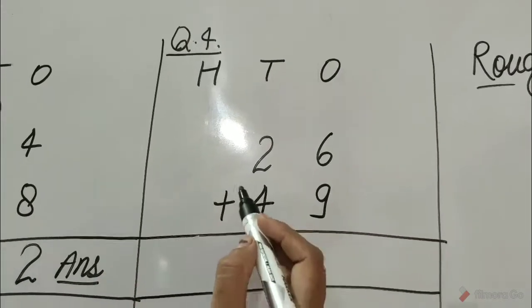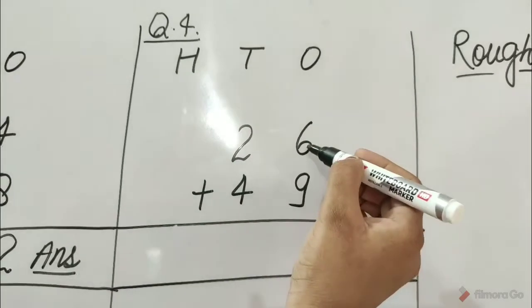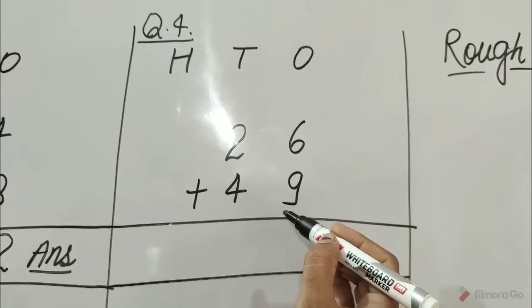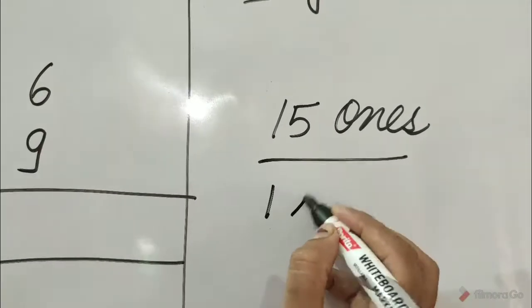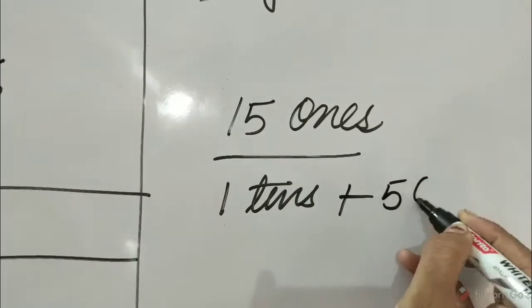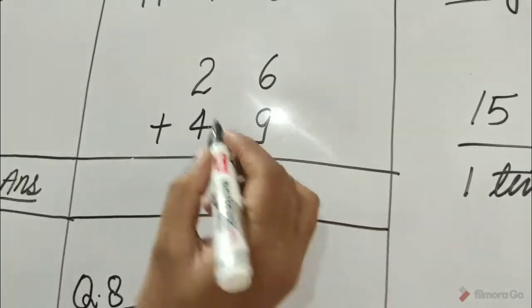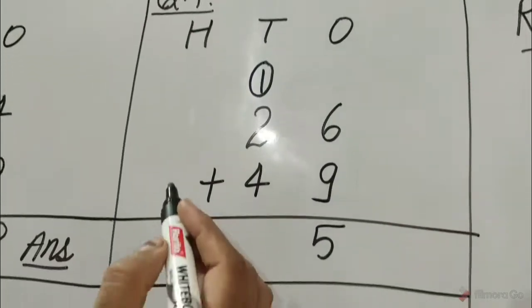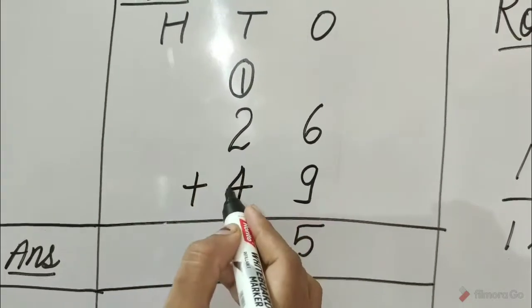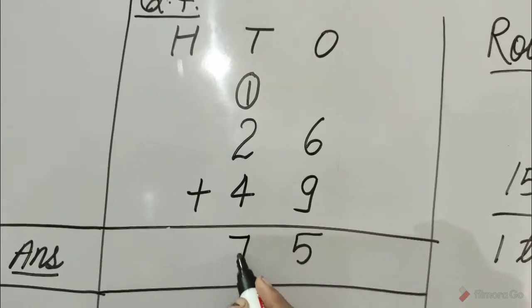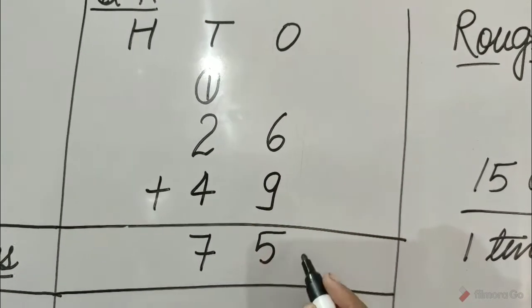Question number 4 is 26 plus 49. Let's add ones first: 6 ones plus 9 ones is equal to 15 ones. 15 ones means 1 ten plus 5 ones. Write down 5 under the ones and carry over 1 at the tens. Now let's add tens: 1 plus 2 plus 4 is equal to 7 tens. Hence, 26 plus 49 is equal to 75.